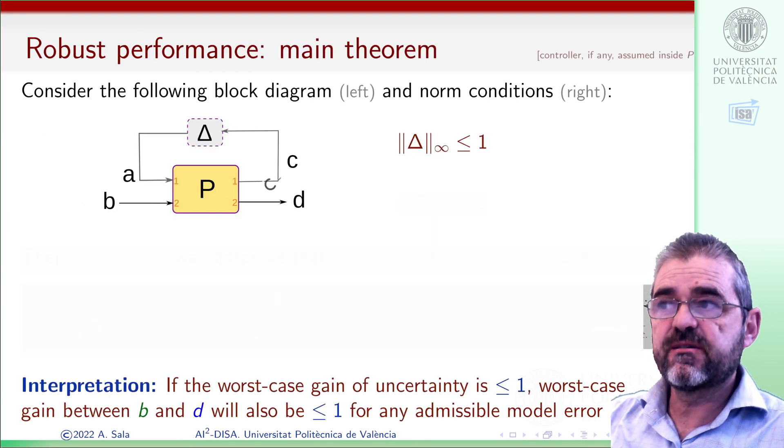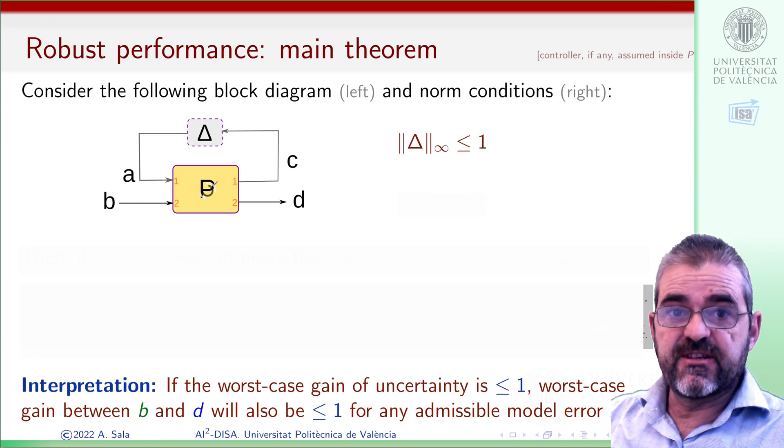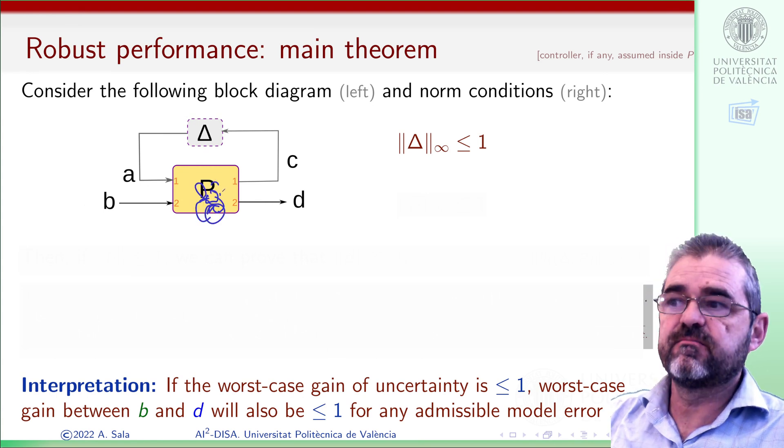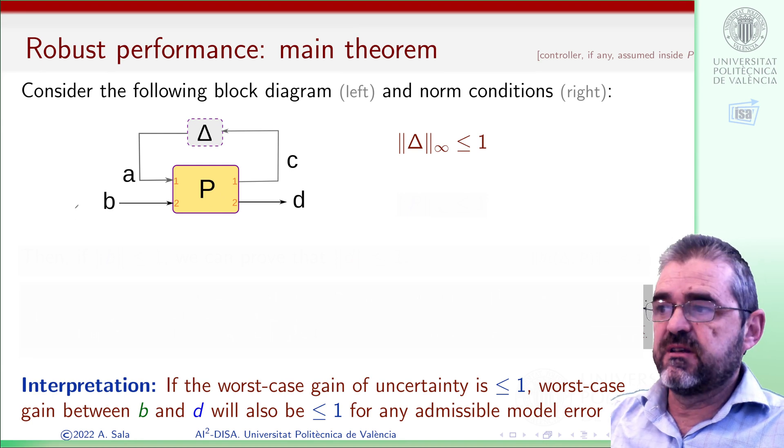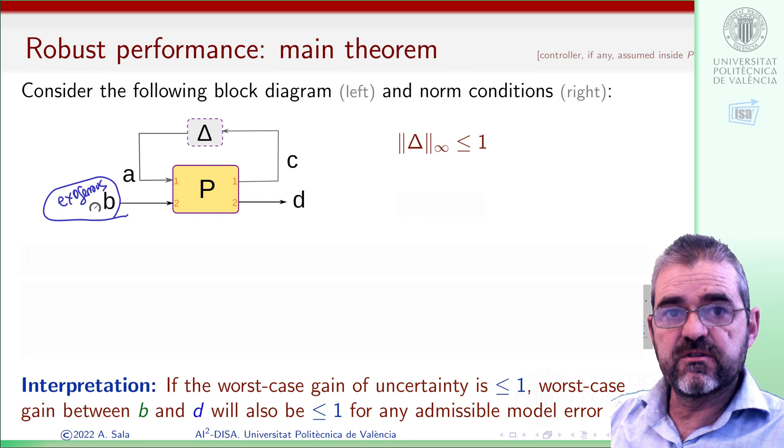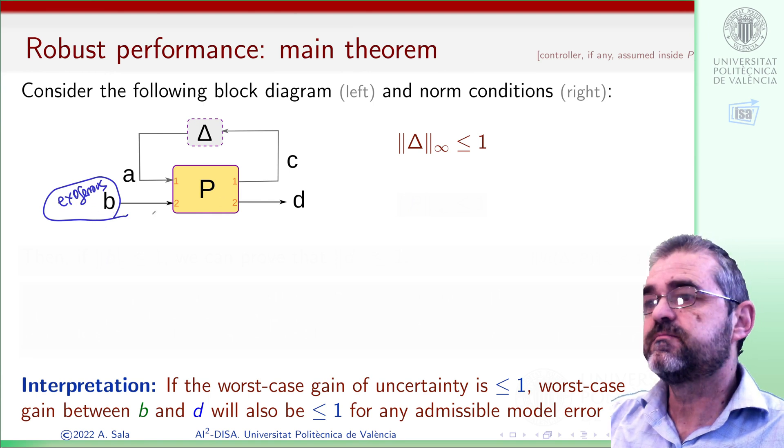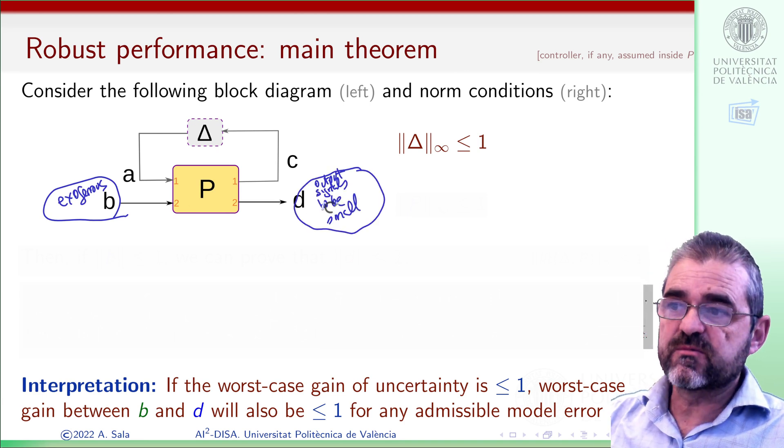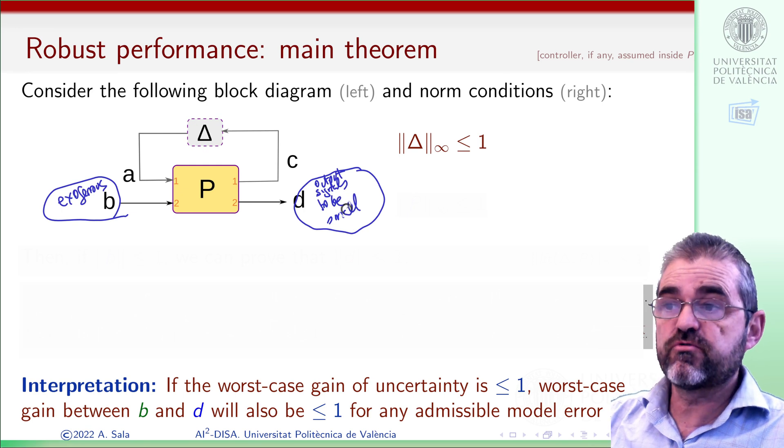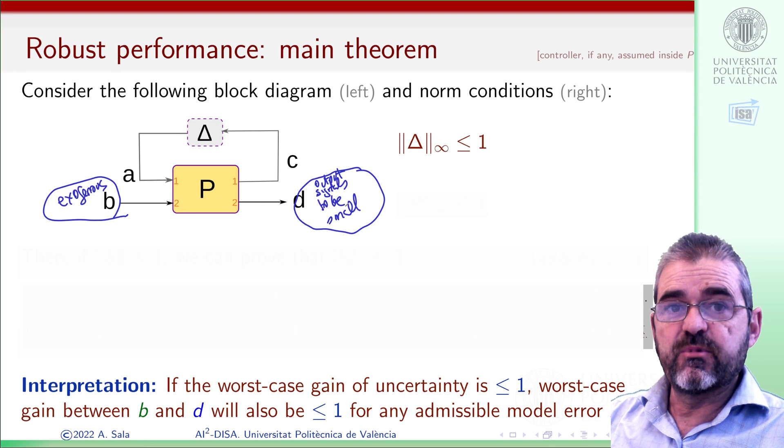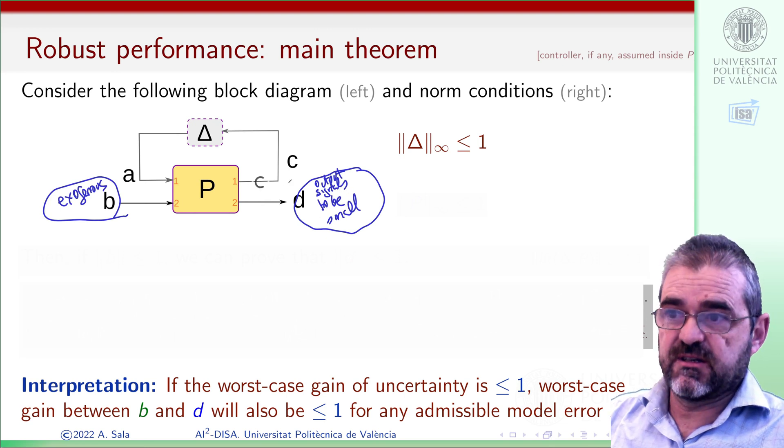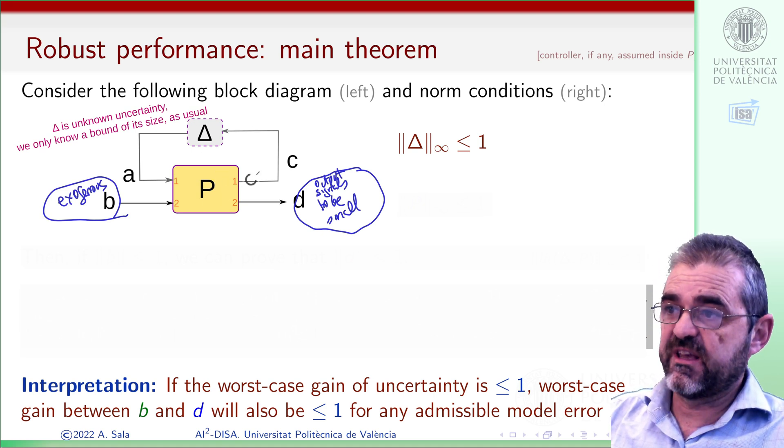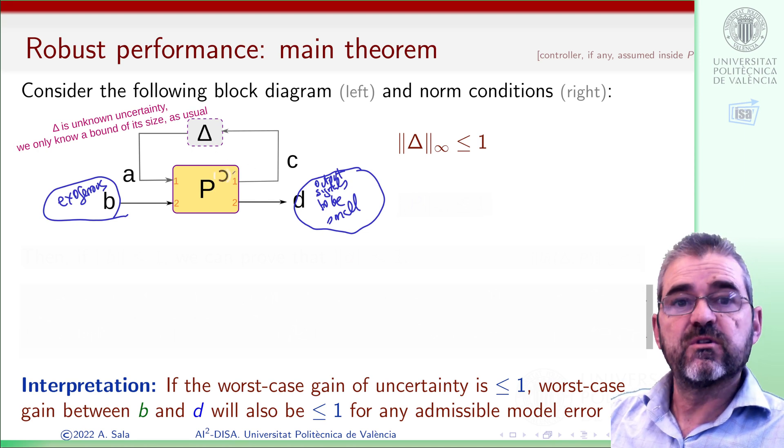So let us consider this block diagram. Maybe this generalized plant P is in closed loop, so we have some control loops inside. We will understand B to be exogenous inputs, setpoints, disturbances, and the like. And we will understand D to be a set of output signals that must be small in our particular problem—usually loop errors and maybe limitations to manipulated variables for saturation or robustness. Then we have some uncertainty in our control loop, which we have extracted like this for our formal analysis.